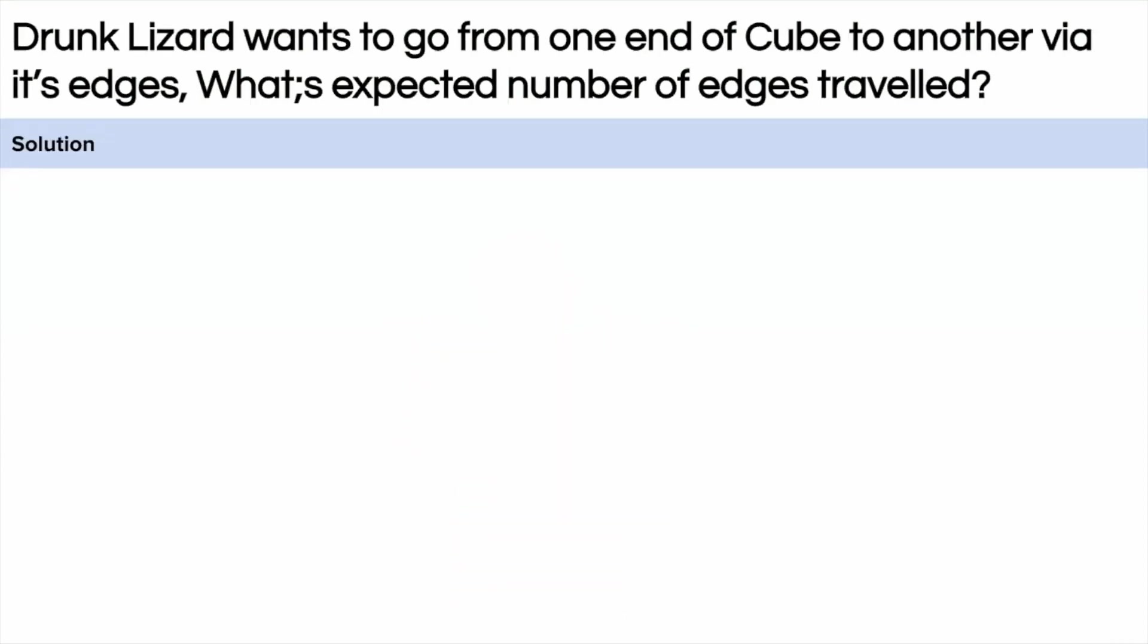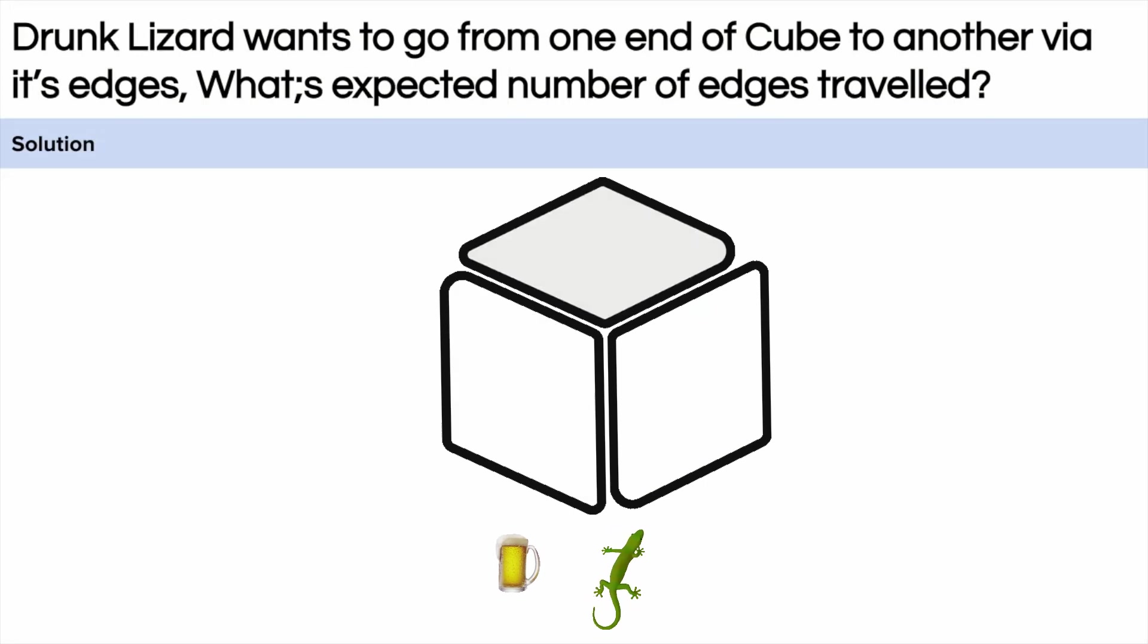Today's question is a very interesting question. Suppose there is a drunken lizard which wants to go from one end of the cube to another end of the cube and the lizard can move along the edges only. This is the condition.